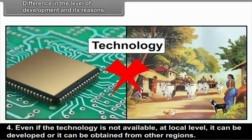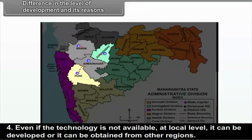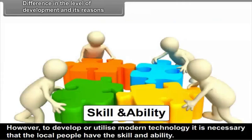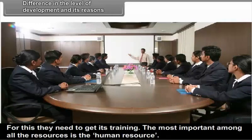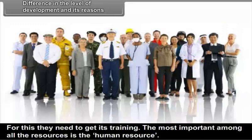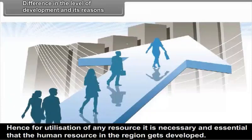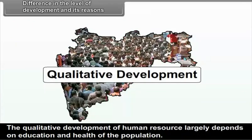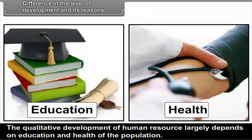Even if technology is not available at local level, it can be developed or obtained from other regions. However, to develop or utilize modern technology, it is necessary that local people have the skill and ability, and for this they need to get training. The most important among all resources is the human resource. Hence, for utilization of any resource, it is necessary and essential that the human resource in the region gets developed. The qualitative development of human resource largely depends on education and health of the population.